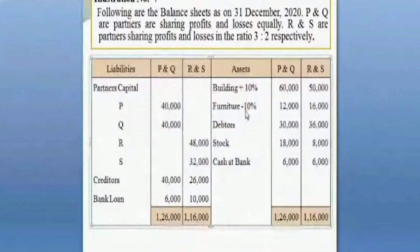Adjustment number 4: provision for doubtful debt is to be created at 5% on the debtors of both firms. For P&Q, the debtors are 30,000, so the provision for doubtful debts is calculated at 5% on 30,000.